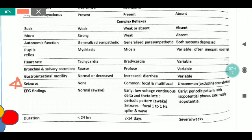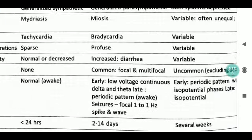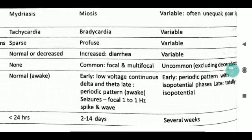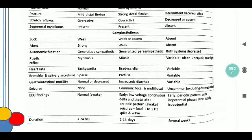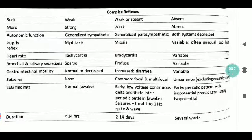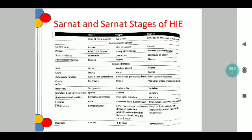The most characteristic feature to distinguish the three stages: seizures are not present in stage 1, are present in stage 2, and are not present in stage 3. If you consider the EEG findings, they will be normal in stage 1. By stage 2, there will be early changes in both the delta and theta wave pattern and focal spikes due to seizure activity. Early changes will also be there in stage 3. Regarding duration: stage 1 will resolve within 24 hours, stage 2 lasts 2 to 14 days, and stage 3 can last for weeks together.